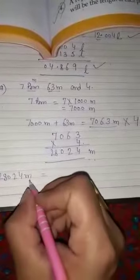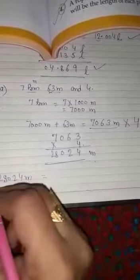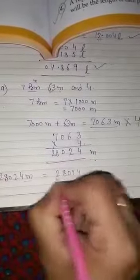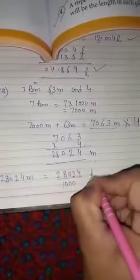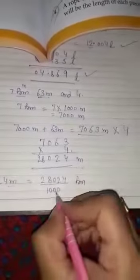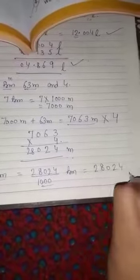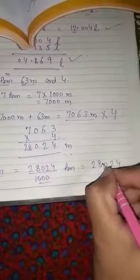28,024 meter convert into kilometer. Meter to kilometer, then divide with the thousand. Downside is 3 zeros. 28,024. From backside, leave 3 digits, then write their point.